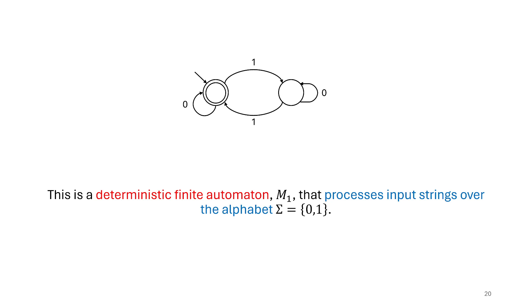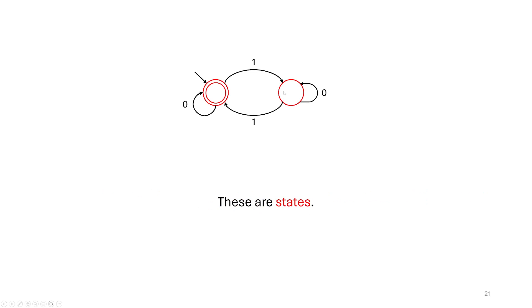And then we can see that there are ones and zeros depicted here. That's helping us understand that this particular machine is for binary strings. It will do something with binary strings. It will process strings over our standard default alphabet. So let's look a little bit closer now. These circles here, indicated in red, are the states of the machine. So we sometimes call this a state machine, and it has states.